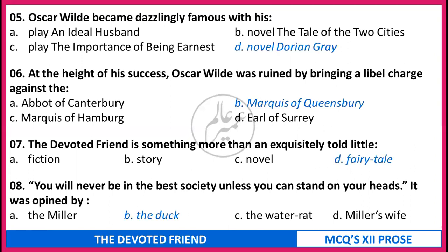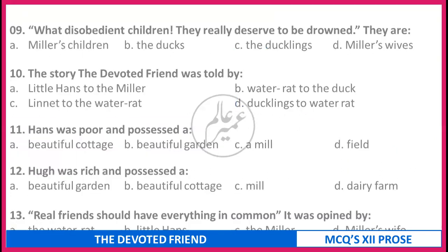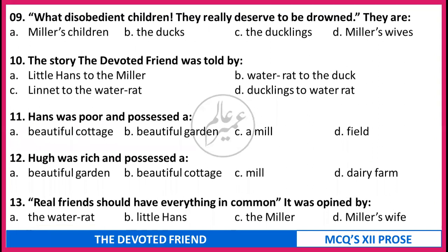Here are the answers. Five - novel Dorian Gray. Six - Marquis of Queensbury. Seventh - Fairy Tale.